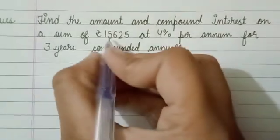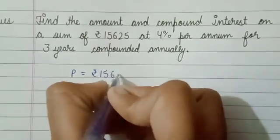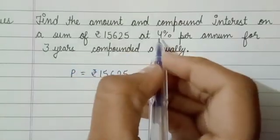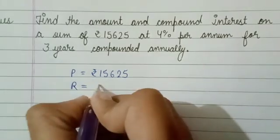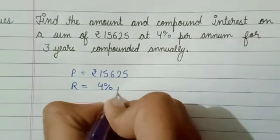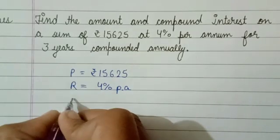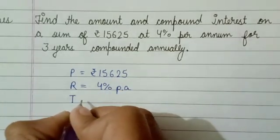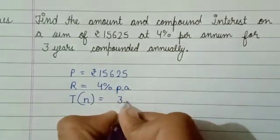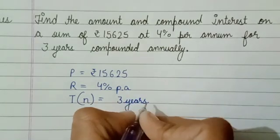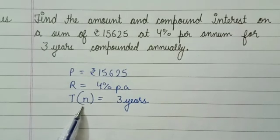So first, principal is given: 15625. Rate is 4% per annum. Then time, denoted by n, equals 3 years. So we have P, R, and time or n.